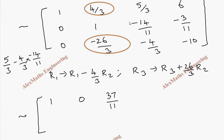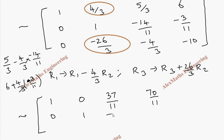For the constant in R1: 6 minus (4/3)×(-3/11). We can cancel and make this positive: 4/11. After taking LCM: 66 + 4 = 70/11. And R2 is written as 0, 1, -14/11, -3/11.